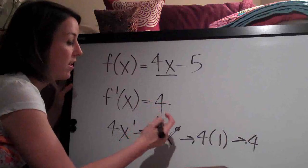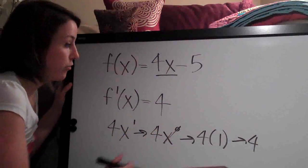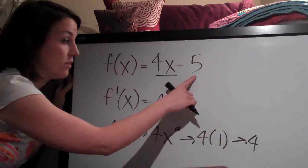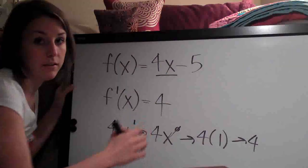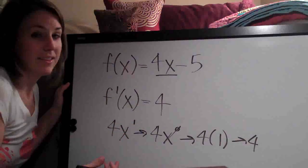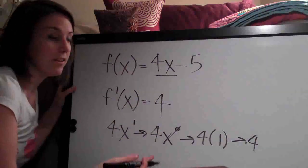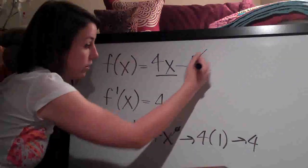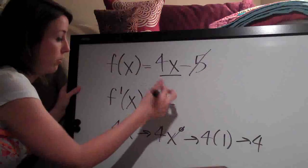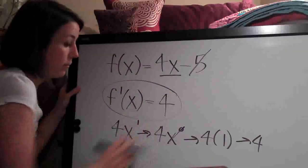But anyway, so 4 and then as you also become comfortable with, the derivative of any constant is always 0. So the derivative of 5 is 0. The derivative of 10 is 0. The derivative of 17,427 is 0. So the minus 5 goes away. And the derivative of this problem, 4x minus 5, is just 4. So there's our answer.